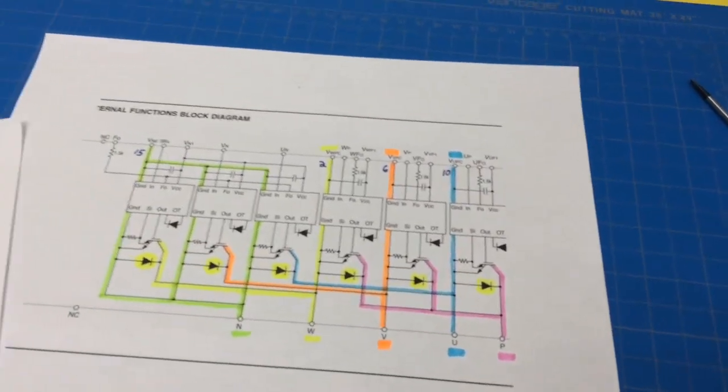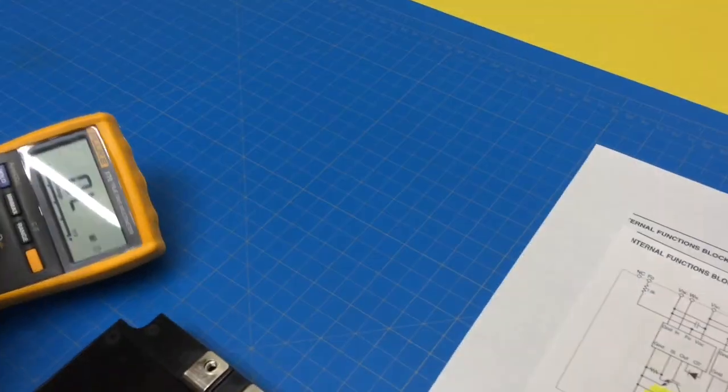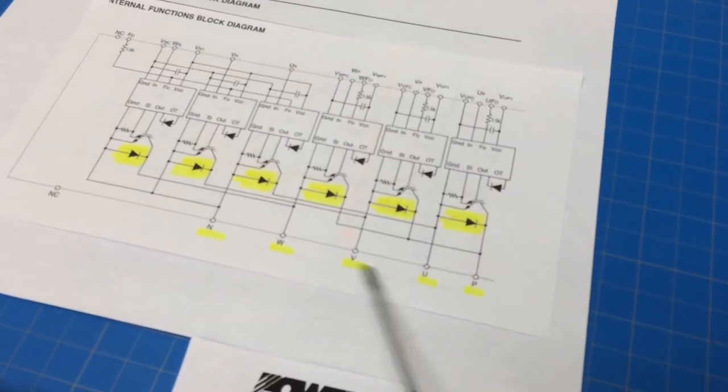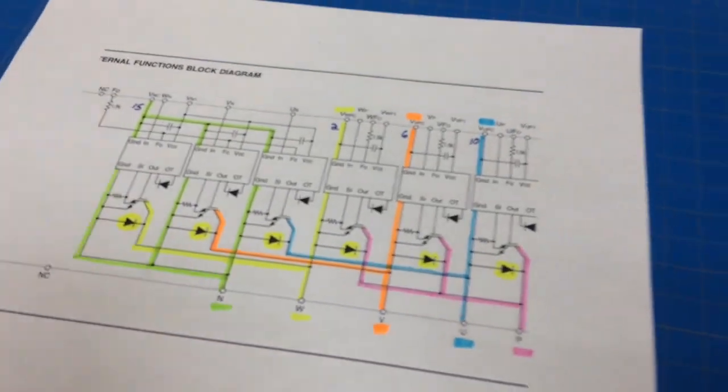So if we look at these six diodes right here, we just test those with our meter on diode scale, just like any other diode. But the question is, where do we put our meter leads? Well, look at this one here and see if we can figure it out.